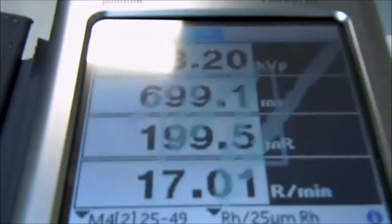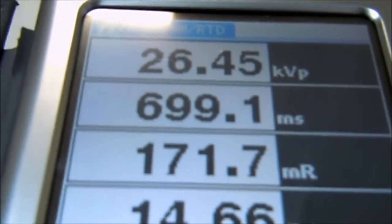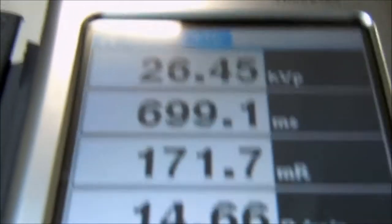Take another shot. Set it to 25. Detector's reading it, and now I get 26.45, which it should be within plus or minus 2 KV.